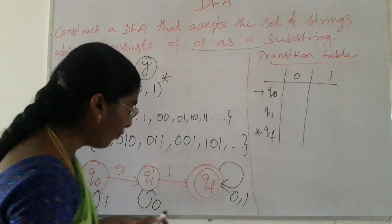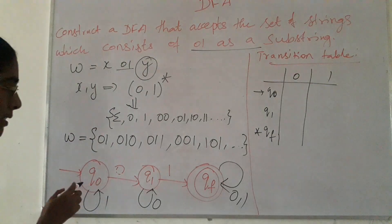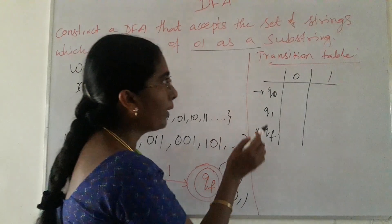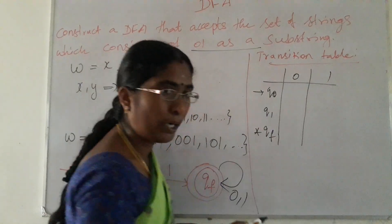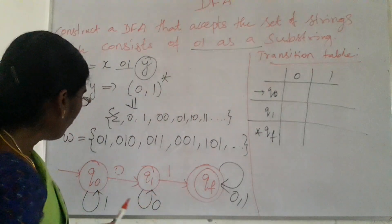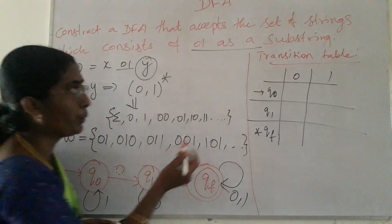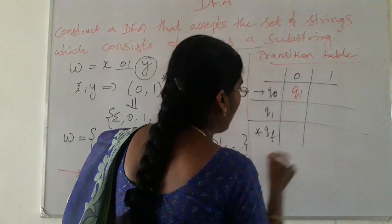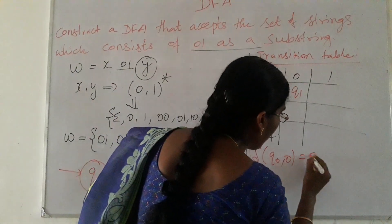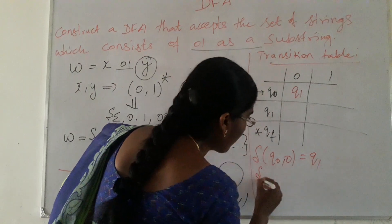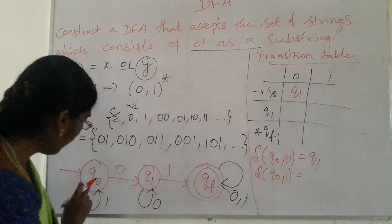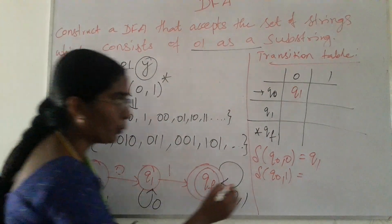Now, what is the transition table for this DFA? It consists of three states: Q0, Q1, QF, with input symbols '0' and '1'. The transition δ(Q0, 0) = Q1. The transition δ(Q0, 1) = Q0 (self-transition). Next, δ(Q1, 0) = Q1 (self-transition).